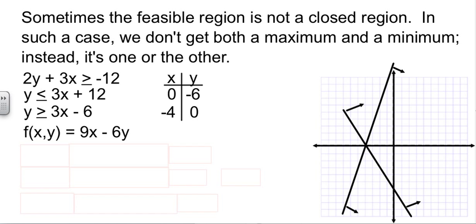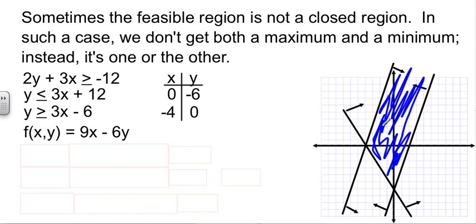And then, one more line to graph. The intercept is negative 6, and the slope is up 3 over 1. 0 is greater than 0 minus 6. 0 greater than negative 6 is also true. So, our region that we get is this one. And it doesn't close up.